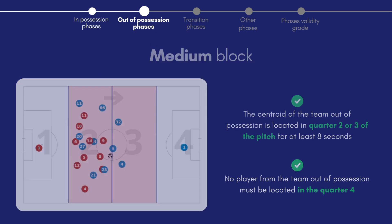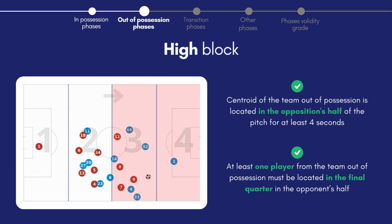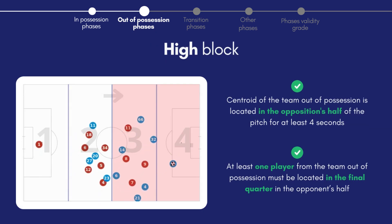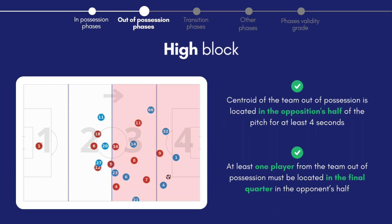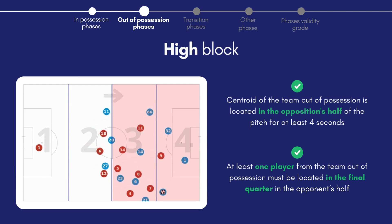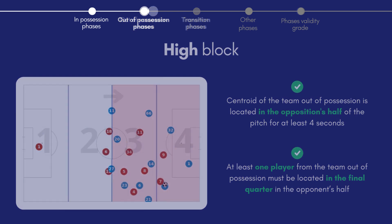Finally we have the high block, where a team pushes the back line up to win the ball close to goal. The centroid of the defending team must be in the opponent's half for at least four seconds.